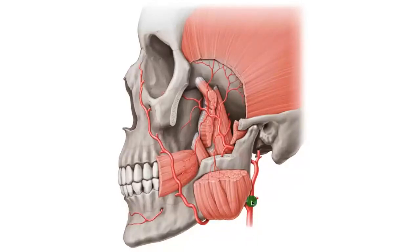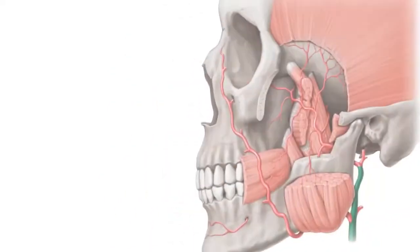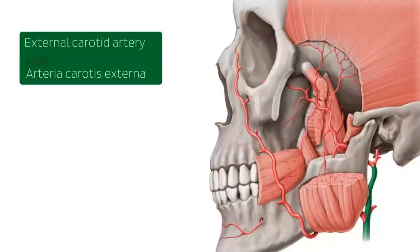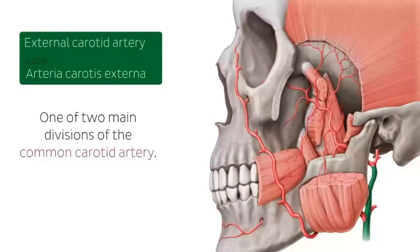This artery branches off from the external carotid artery, just deep to the neck of the mandible. Before we talk about the maxillary artery, I would like to highlight the external carotid artery. The external carotid artery is one of the two main divisions of the common carotid artery, the other one being the internal carotid artery. The bifurcation of the common carotid occurs at the level of the thyroid cartilage.